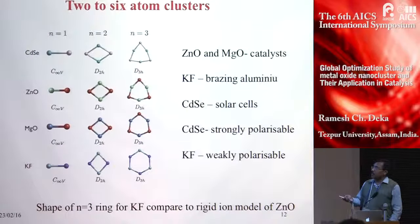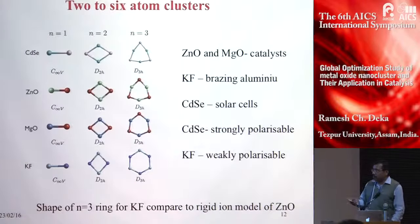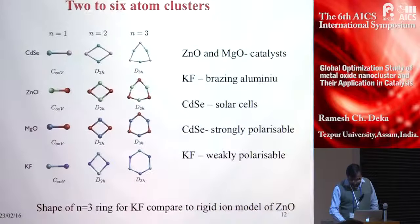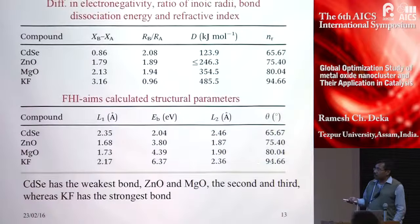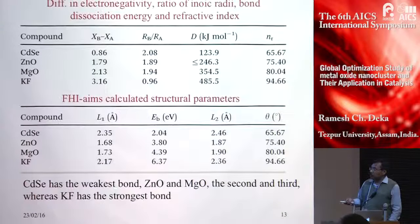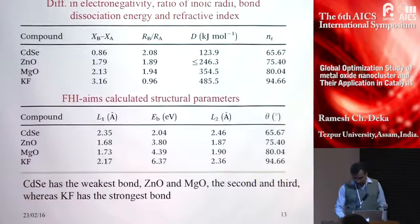For N=3 (6 atoms), cadmium sulfide has a triangular structure, while potassium fluoride becomes a ring structure like benzene. The calculated bond lengths and angles agree with literature values. From bond energy calculations, cadmium sulfide has the weakest bond, zinc oxide and magnesium oxide are second and third weakest, while potassium fluoride has the strongest bond.